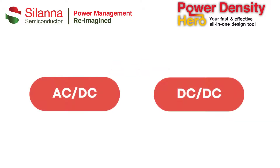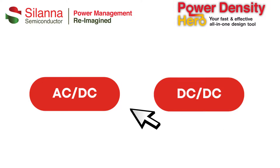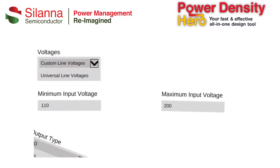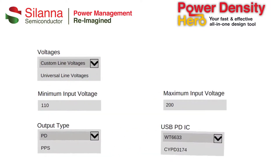After logging into Power Density Hero, you start the design process by choosing your device type, then fill out the required fields based on your product requirements.